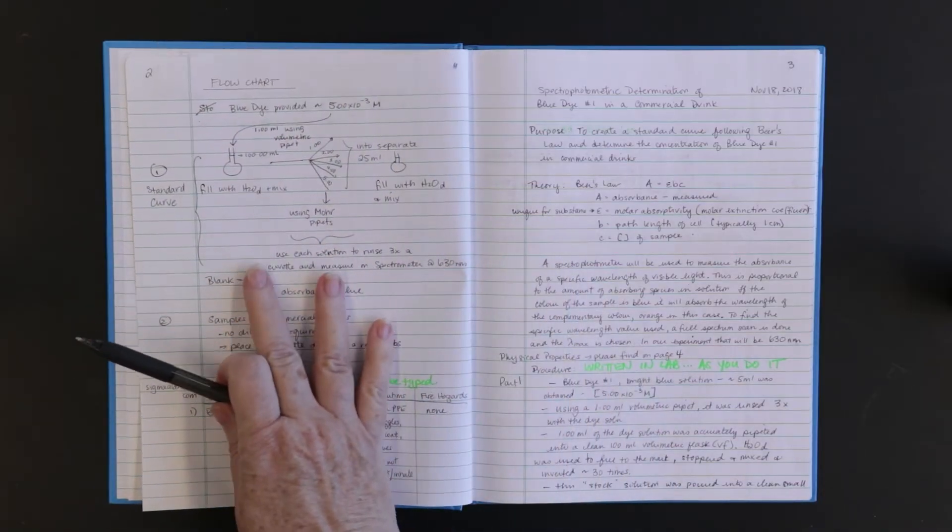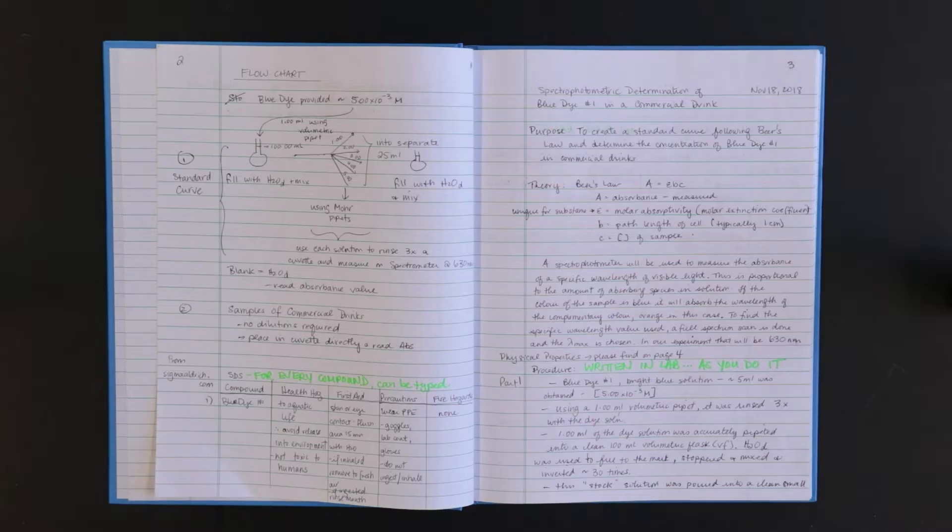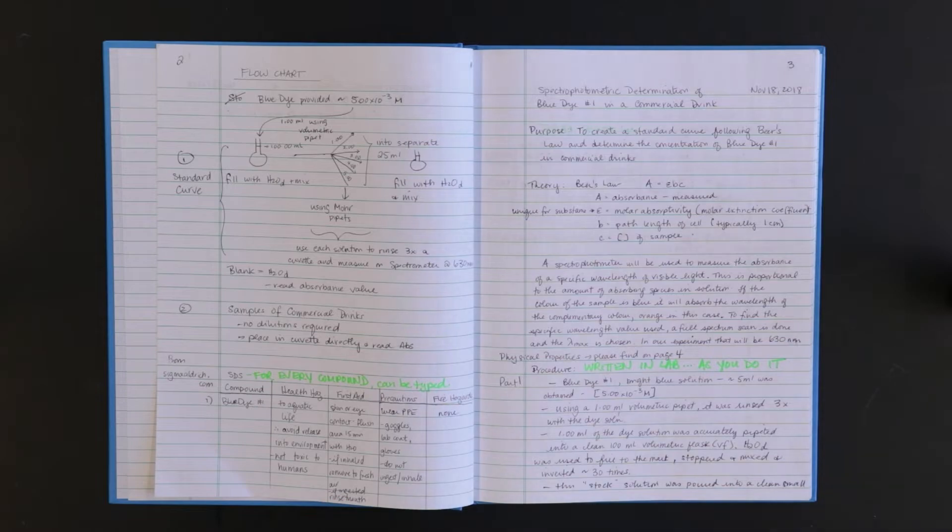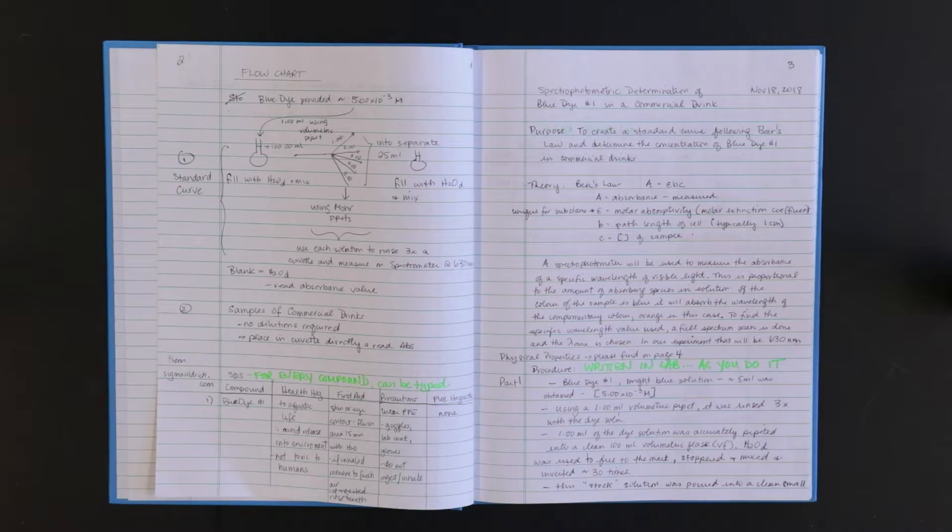On the left-hand page you need an experiment outline. This is your plan for the day. It is a summarized procedure written in point form or better yet a flow chart. You will refer to this section as you perform the experiment rather than trying to read through your lab manual.